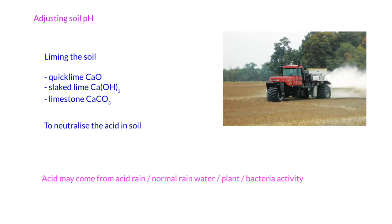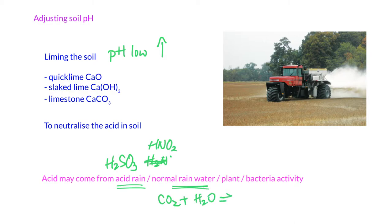First, adjusting soil pH, we also call this liming the soil. Liming means we try to bring the pH up when it's very low. Why is the pH very low? The soil becomes acidic from acid rain, which includes sulfurous acid and nitrous acid. Normal rainwater is also acidic because carbon dioxide dissolves in water forming carbonic acid. Plants themselves may release chemicals, and bacteria activity can make soil acidic.